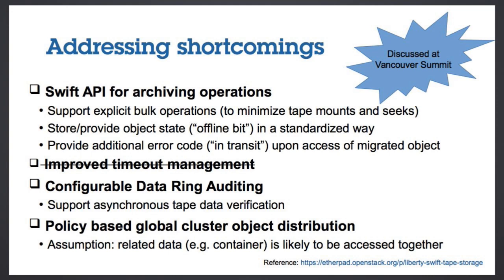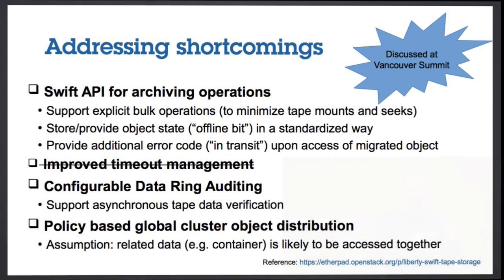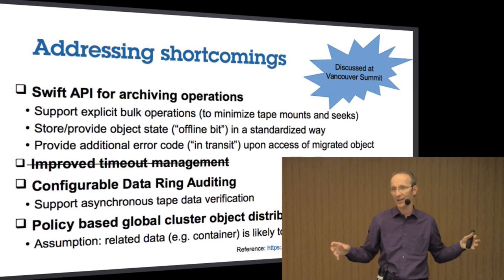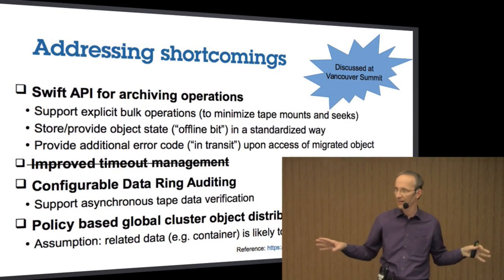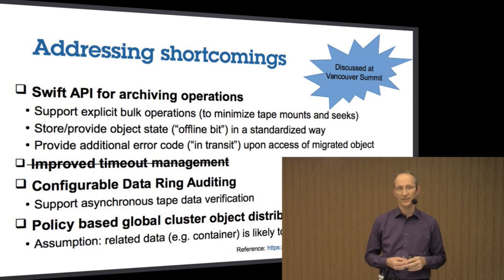Finally, we try to optimize the way we put data on tape to actually collocate objects — for example, those that are in a single container — onto ideally a single tape cartridge, and not spread them across cartridges, which is what Swift normally does when distributing data across the entire cluster and across the disk drives.